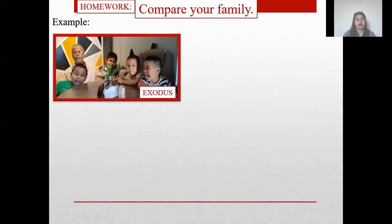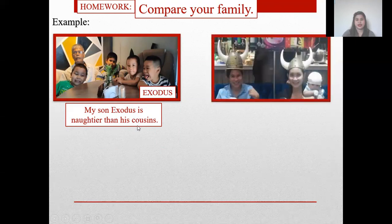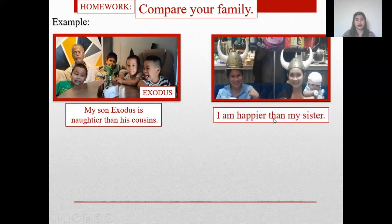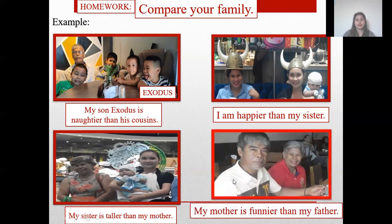Example — these are Exodus' cousins, and this is Exodus' father, and this is Exodus. My son Exodus is naughtier than his cousin. Next, this is Teacher May and this is my sister. I am happier than my sister. This is my mom and this is my sister — my sister is taller than my mother. This is my father and this is my mother — my mother is funnier than my father.